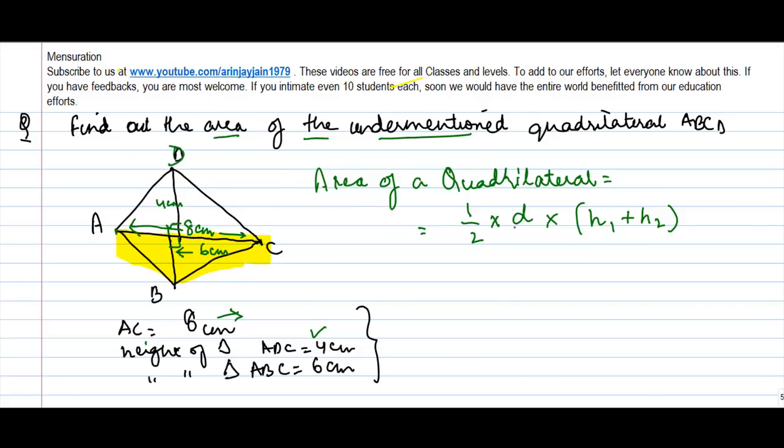So half into d, where the diagonal is AC, and we know AC is 8 centimeters. Into height 1, which is 4, plus 6, which is the height of the second triangle. So we get half into 8 into 10.